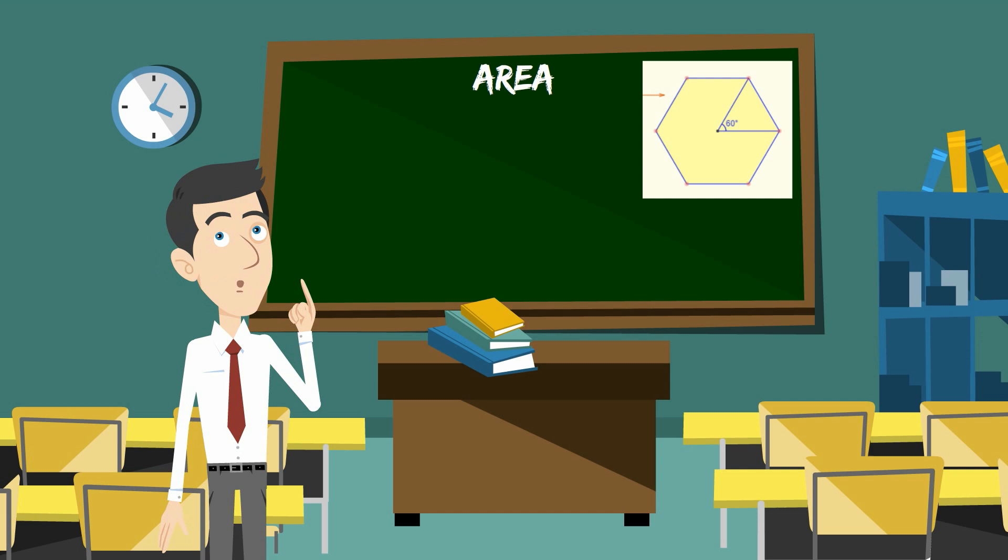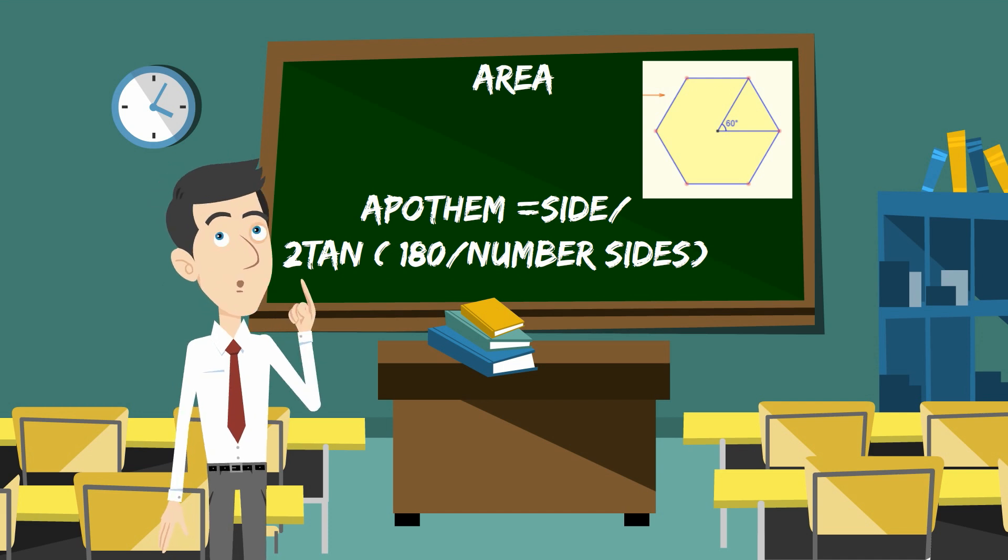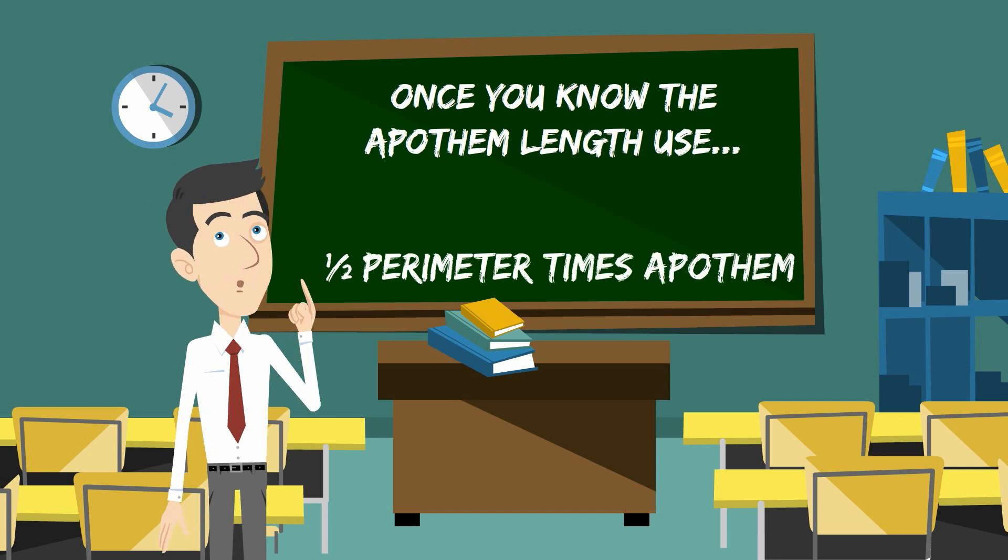If you don't know the apothem length, then first find the apothem length by using side divided by 2 times tangent times in parentheses 180 divided by the number of sides. Then once you know the apothem, use 1 half the perimeter times the apothem.